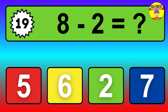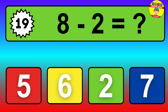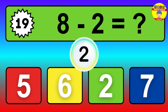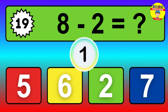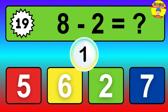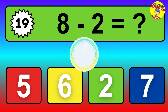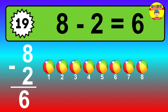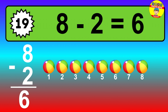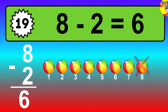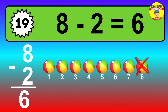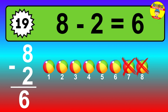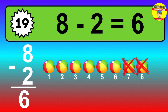Question 19. 8 minus 2 equals what? So the answer is 8 minus 2 is 6. Let's count it. 1, 2, 3, 4, 5, 6.